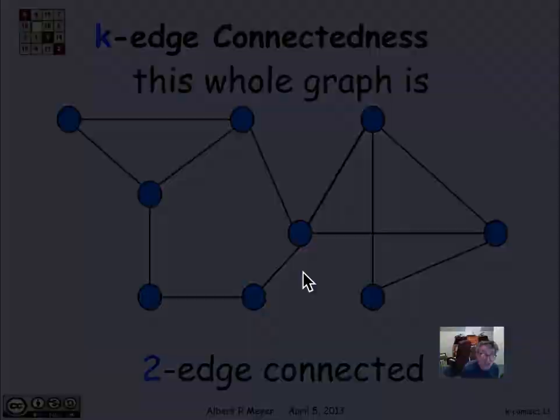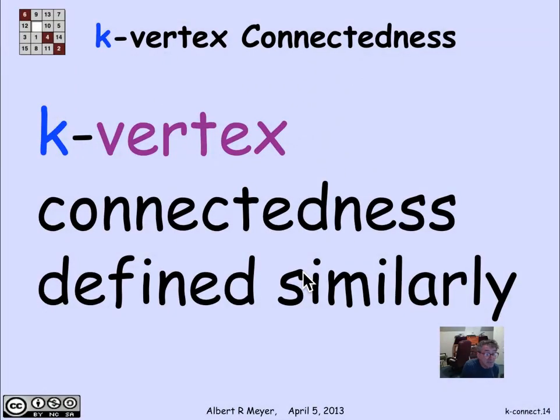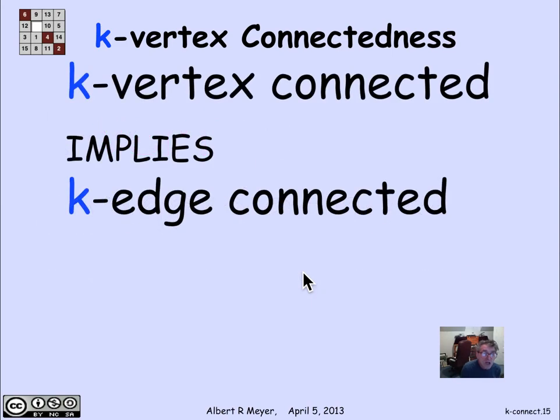Now there's a corresponding definition of vertex connected, meaning it's k vertex connected if you can remove any number of vertices up to k, and it will stay connected. If it's k vertex connected, it's certainly k edge connected, but not conversely.